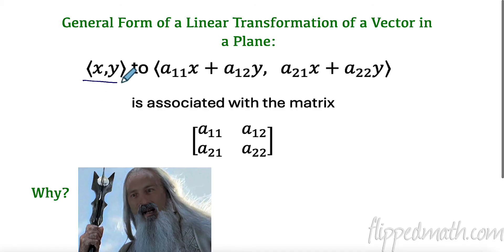Otherwise, we have a vector, we have a linear transformation, and it's going to be associated with a given matrix. So now I want to show you why if I have this vector and this matrix, why we get a11 of x plus a12 of y. I want to show you why that works.